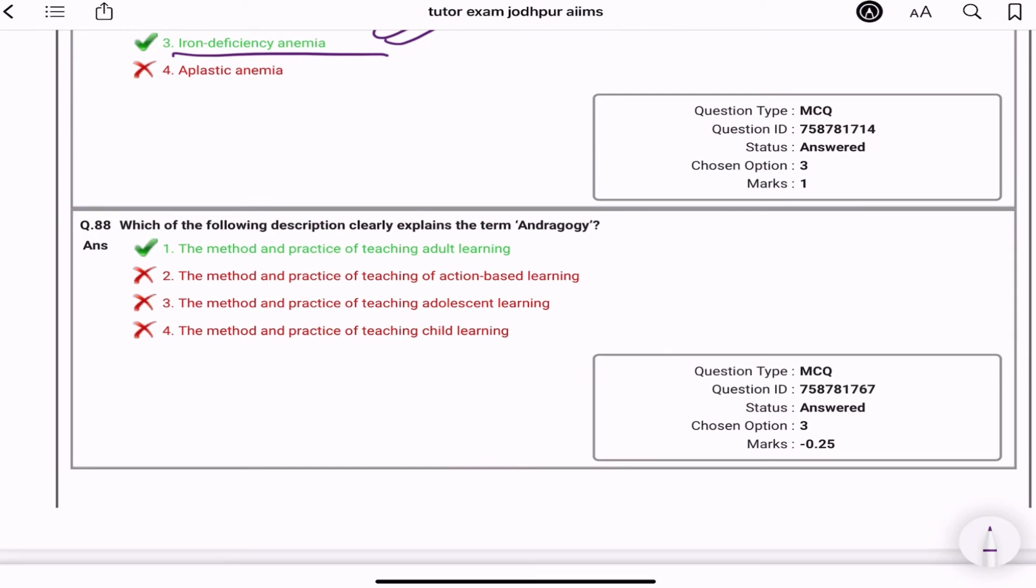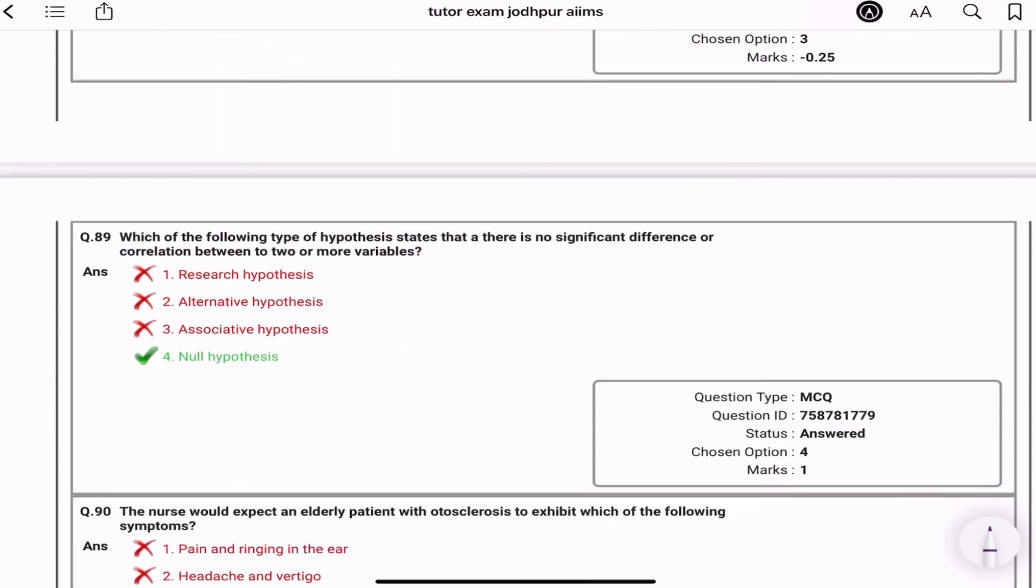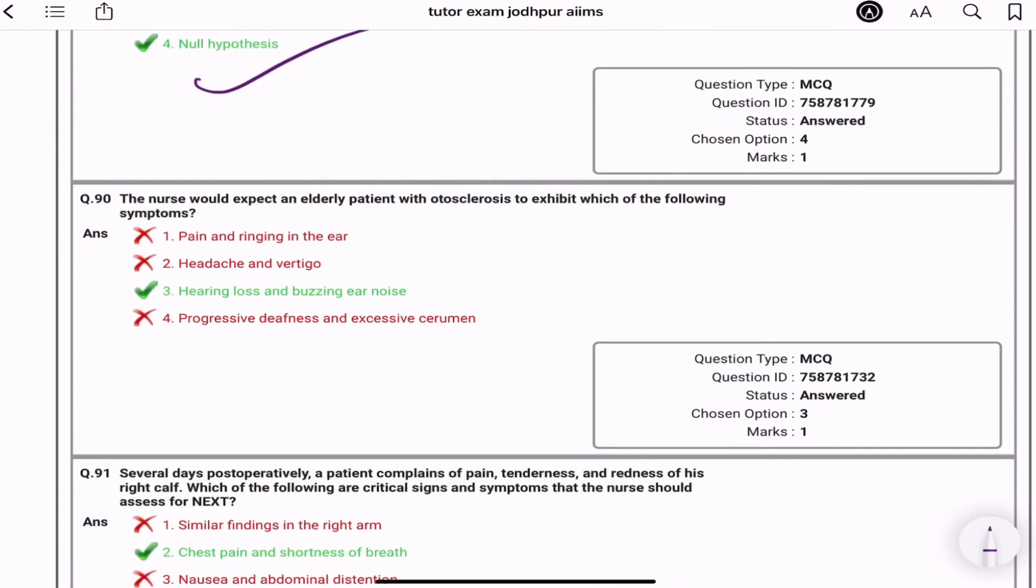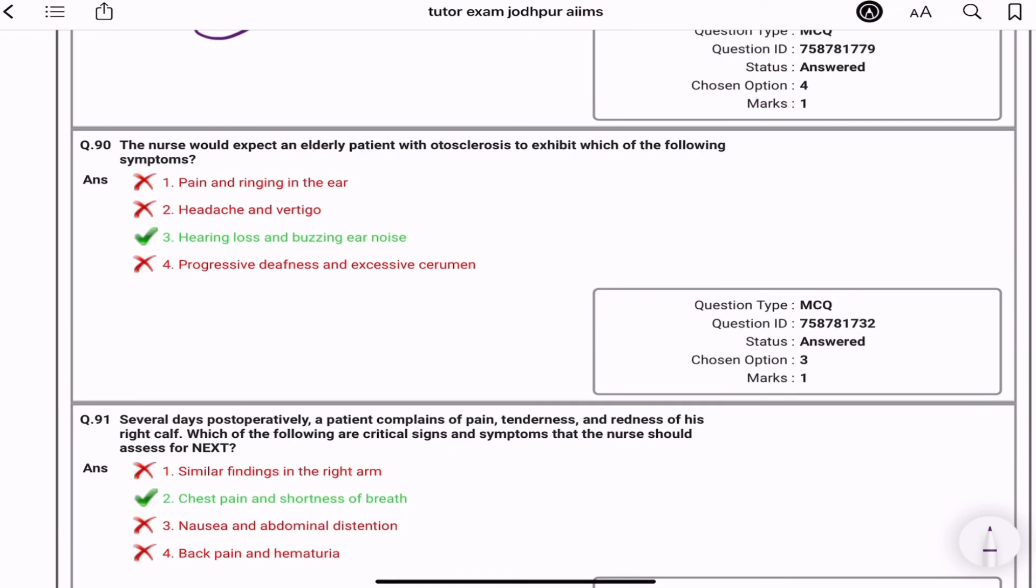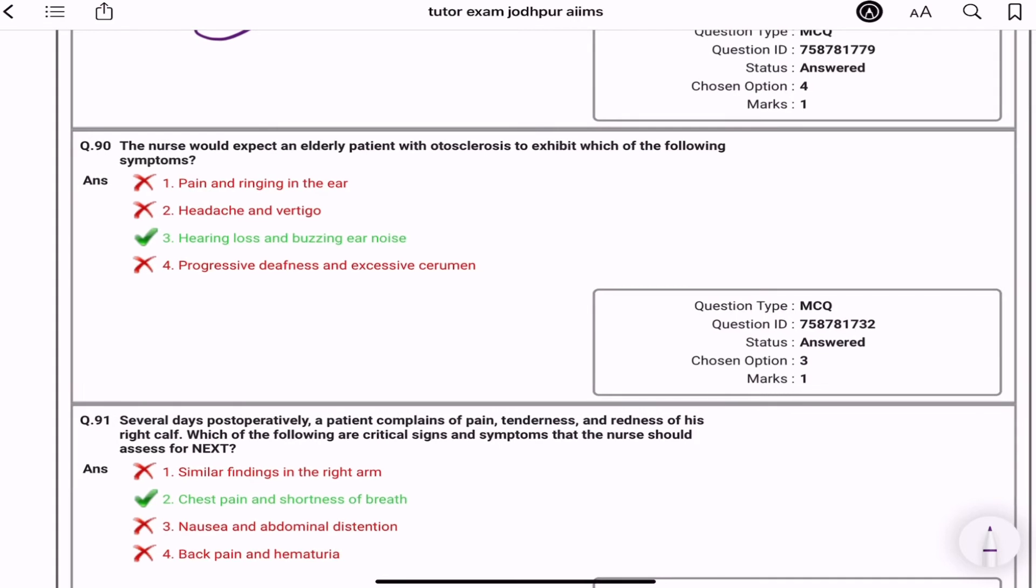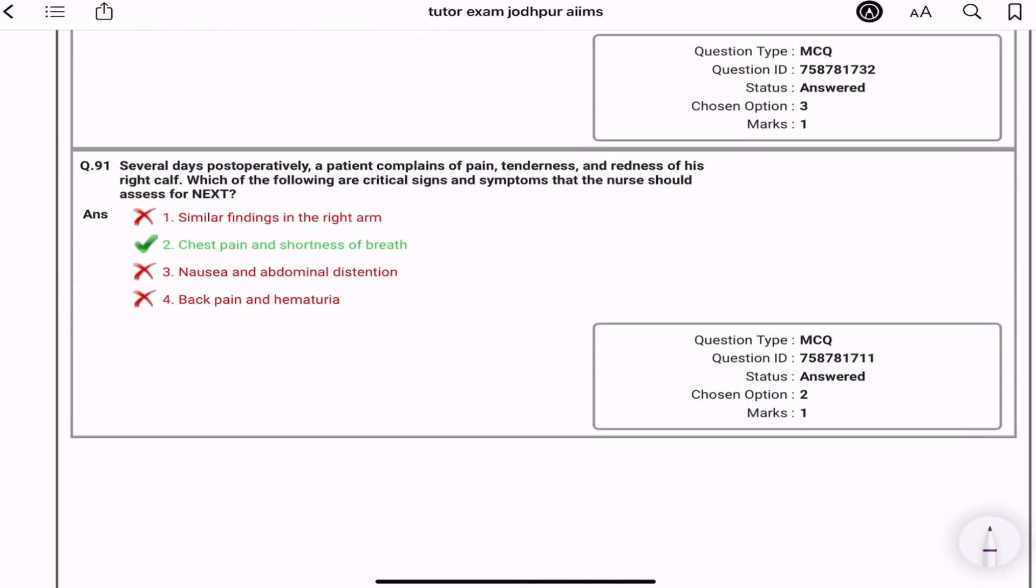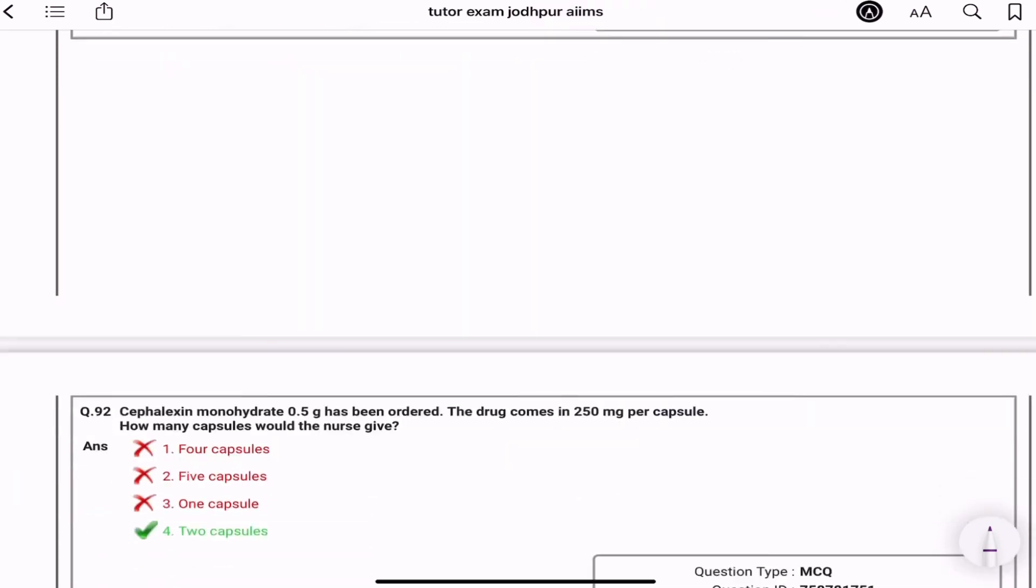The nurse understand the purpose of suture in a wound is to keep the tissue close together so that the healing can occur. The nurse understand the most common type of anemia is iron deficiency anemia. Which of the following description clearly explain the term andragogy? The method and practice of teaching adult learning - andragogy. Which of the following type of hypothesis state that there is no significant difference in correlation between two or more variables? Null hypothesis. The nurse would expect an elderly patient with the otosclerosis to exhibit which of the following symptoms? Patient with otosclerosis exhibits hearing loss and buzzing ear noise. Several days post-operatively, a patient complains of pain, tenderness, redness of his right calf. Which of the following critical signs symptom that nurse should assess for next? Chest pain and shortness of breath. Please comment down why is the reason.